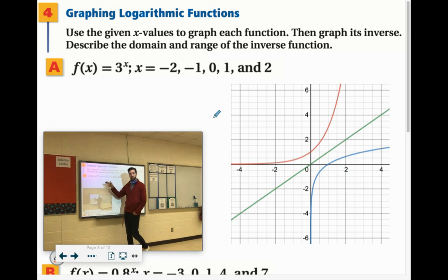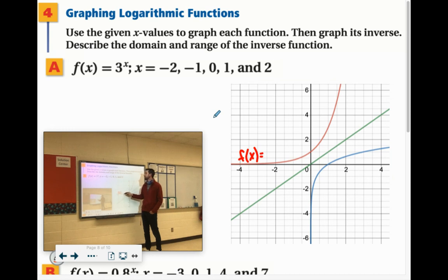So f of x equals 3 to the x power is this red graph. Now the green line is just the y equals x line. And that's the one where it's inverted over. And then the blue one would be the inverse of that.